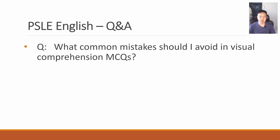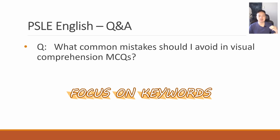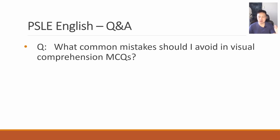What common mistakes should I avoid in visual comprehension MCQs? I notice that a lot of times students just don't read the visual carefully. They make mistakes in true or false questions, where they are required to match the information in the options with the information given in the visual. They must try to understand the option first before they can do the matching. You can also expect some vocabulary questions, so another common mistake is not focusing on the keywords — always try to focus on the keywords not just in the visual, but also in the question and in the options.